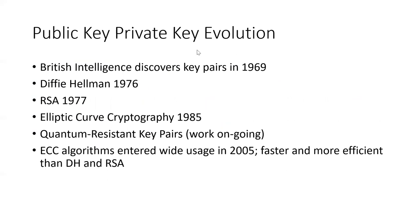The evolution of public-private key cryptography spans about 40-50 years. It was originally developed by British intelligence in the late 1960s but kept secret. The first public announcement came from Diffie-Hellman in 1976 and RSA in 1977. Elliptic curve cryptography was identified in 1985 and entered wide usage in 2005, primarily because it was faster and more efficient than Diffie-Hellman and RSA. Bitcoin was developed in 2008 and Ethereum five years later, which is why both rely on ECC.